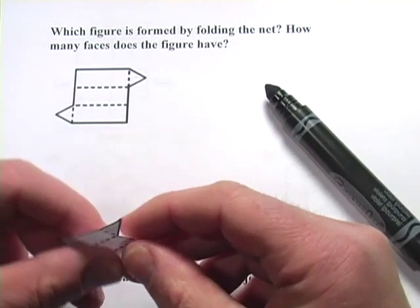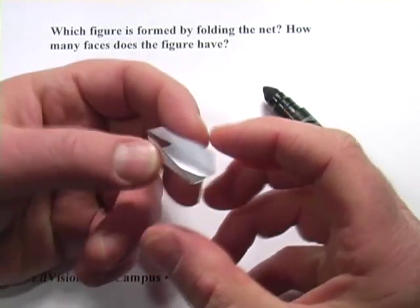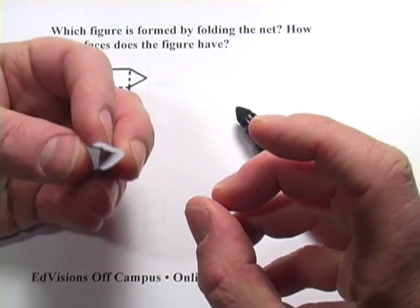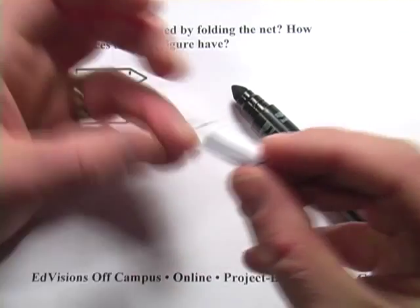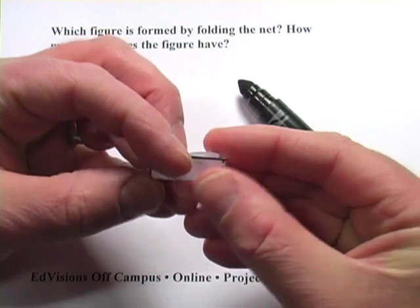But if that's not obvious to you in your head, you might want to just practice and get used to it by actually cutting it out and folding it up. You see, when you fold those sides, you get this sort of triangular shape. And then these triangle ends will fold down and you get a triangular prism. Again, I don't know how well you can see that. There's our triangular prism.